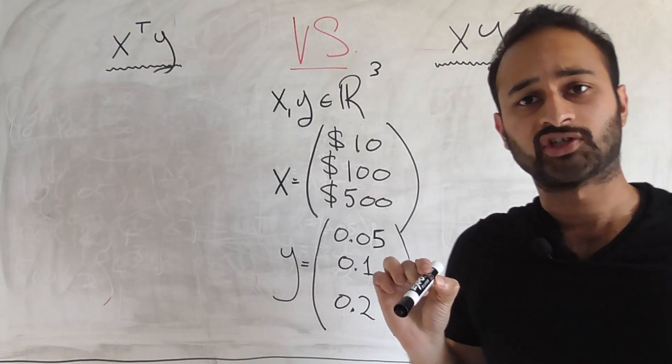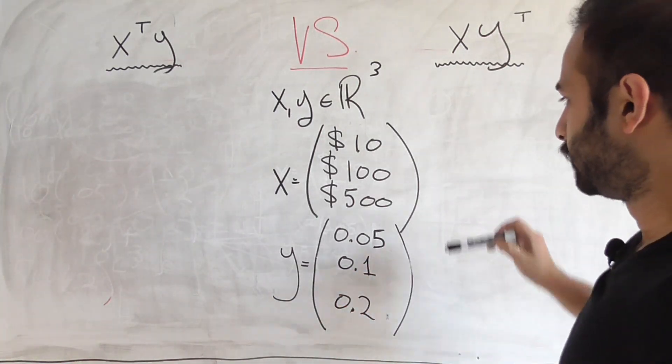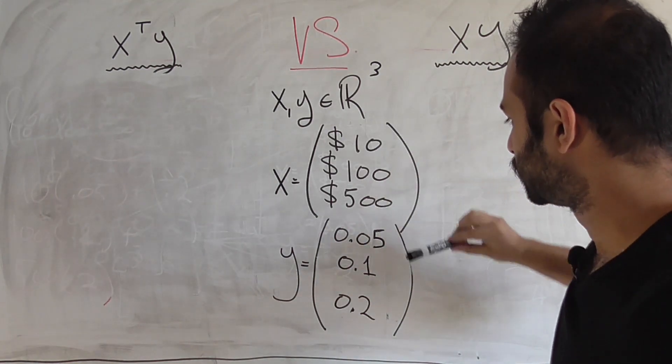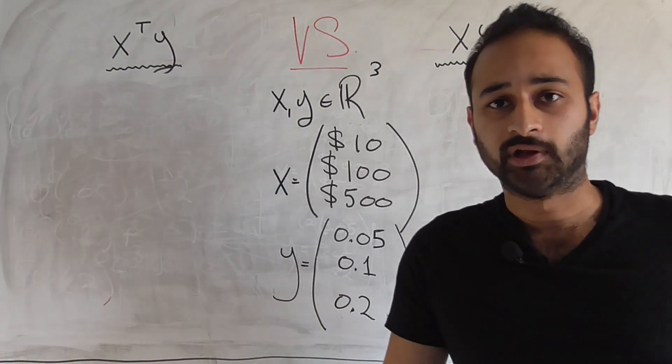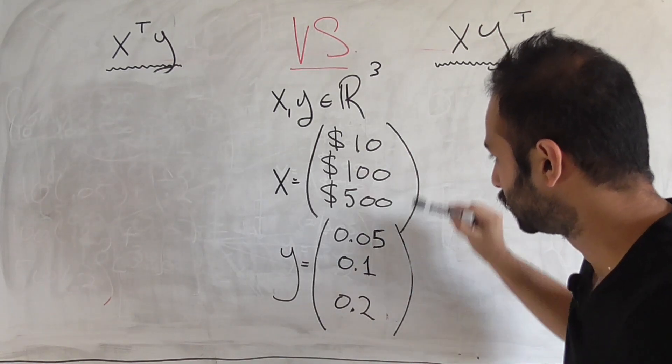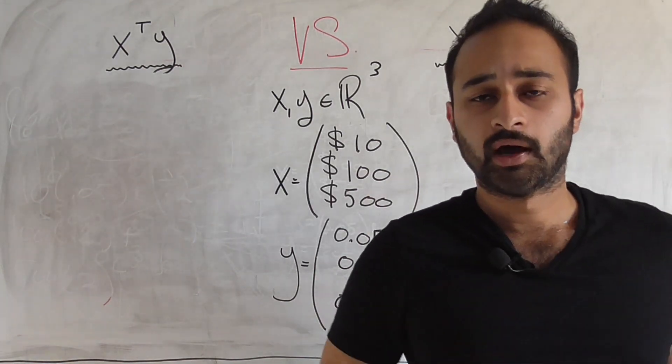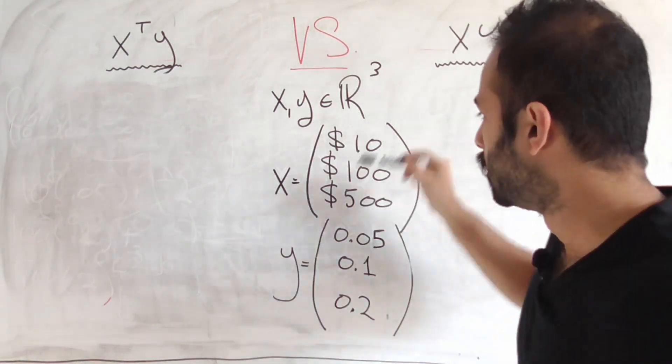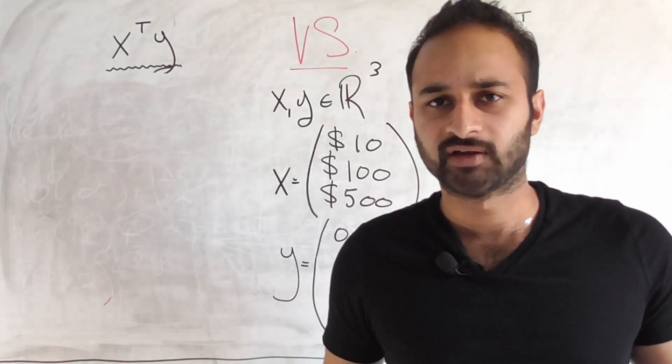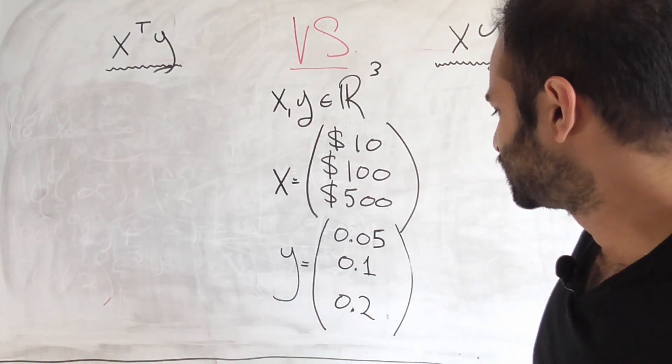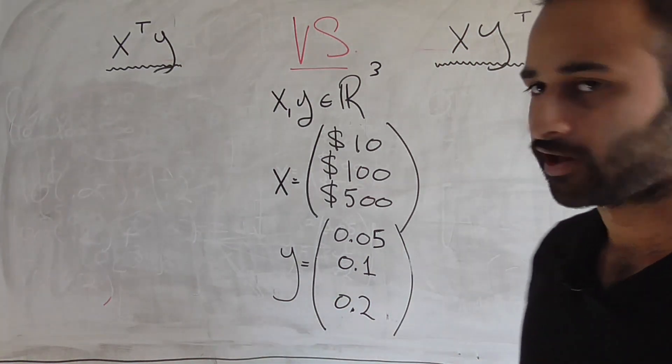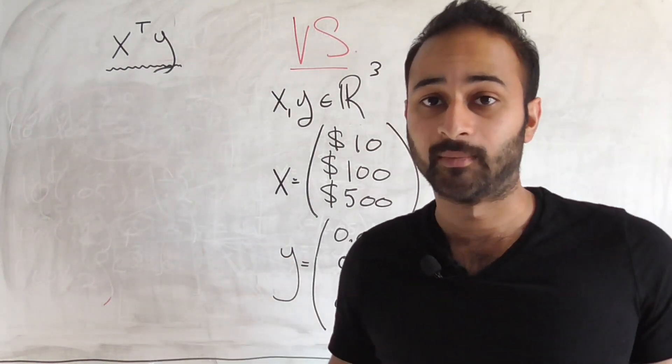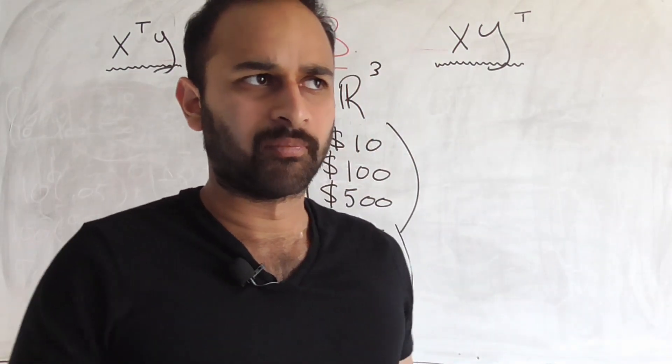Now we've got to talk about what is XY transpose. And to talk about that, we're going to modify our setup just a little bit. So we're going to say that this is how much money you spent on the trip for food, transportation, and lodging. But now, instead of each of these percentages affecting only its corresponding spending amount, we're going to say that all of these tax rates apply to all of these different spending amounts. So maybe think of it now as maybe it's like a city tax, a state tax, and a federal tax, for example, all of which are going to apply to each different spending amount. So now there's a little bit more moving parts.